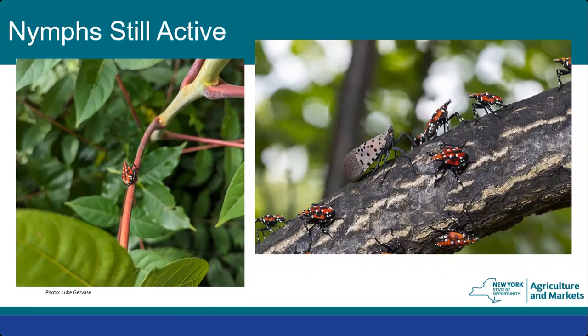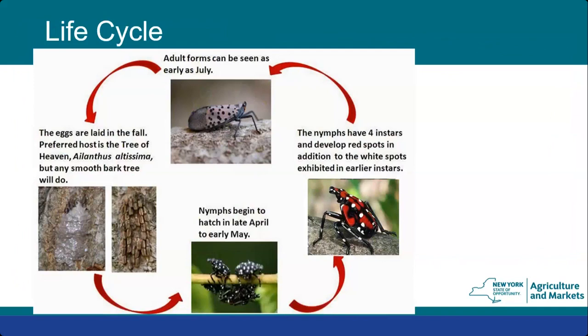Here you can see some fourth instar nymphs on Japanese knotweed on the left — a beautiful photo taken by one of our prison partner contributors — and also mixed life stages on what appears to be a wild grapevine, with an adult and several fourth instar nymphs, showing the mixed life stages at this point of the year.